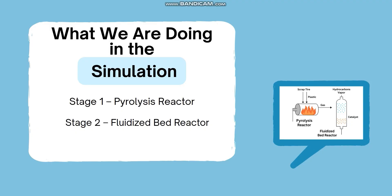First, I want to discuss the processes happening inside the system. The system begins with the pyrolysis reactor, where we feed plastic or tire waste inside the reactor. These materials are heated in the absence of oxygen, causing them to decompose thermally into a mixture of hydrocarbon vapors — mostly long-chain molecules like decane and heptane. These vapors then exit the reactor and enter the fluidized bed reactor.